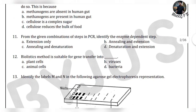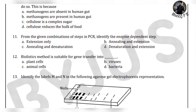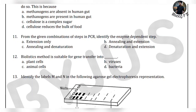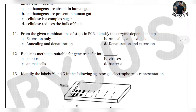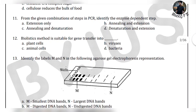Look at the 11th question: from the given combinations of steps in PCR, identify the enzyme-dependent step. PCR has three steps: denaturation, annealing, and elongation. This elongation process is carried out by enzymes, so it is nothing but option A — extension and elongation are the same. Elongation and extension: option A is your answer.